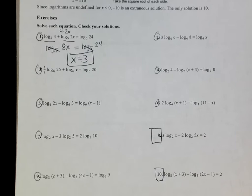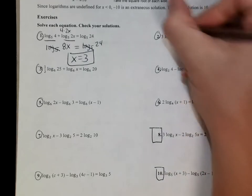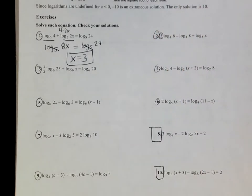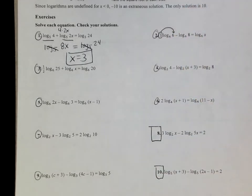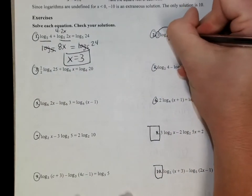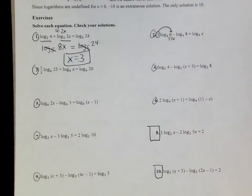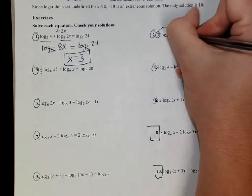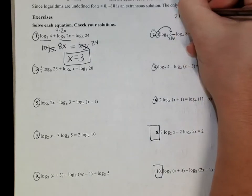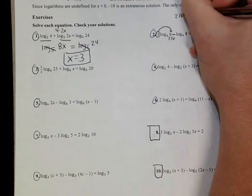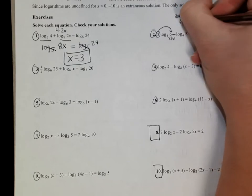Same thing on this next one, but I have a log subtracted, and I have this number in front. So the first thing you need to remember is that that number actually comes up here and becomes an exponent on this. So that's actually 6³, and if you remember what 6³ is, that's 216. Since they are subtracting, to put them together, I am going to have to divide these two things.